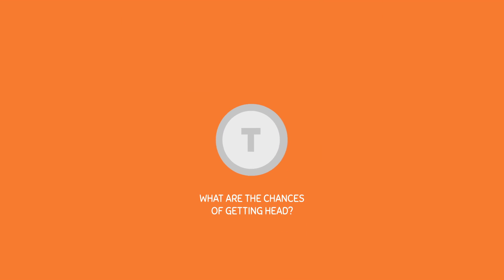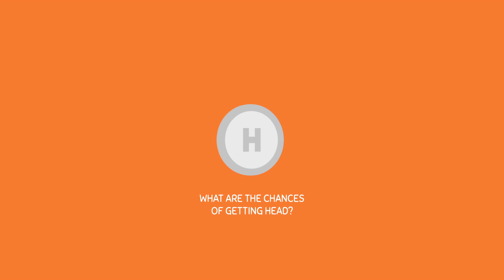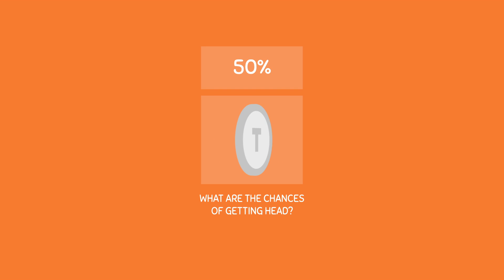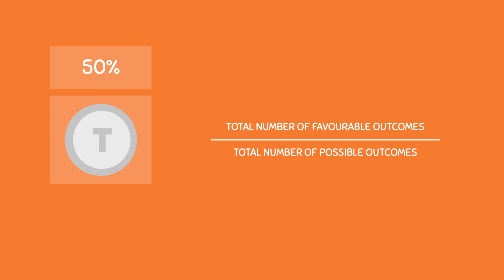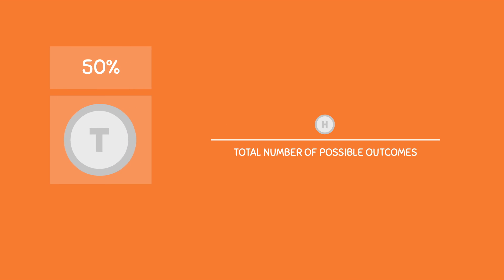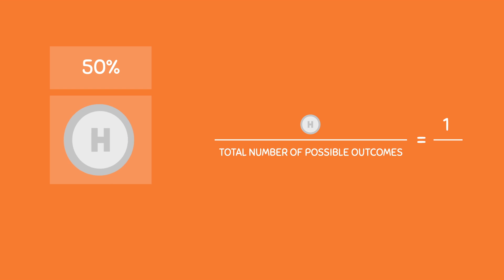For example, if we flip a coin, what are the chances of getting heads? Most people know that the answer is 50%, but how did they get that number? To show you, we will use the formula. The favored outcome is getting heads, which counts as a total of 1 outcome.